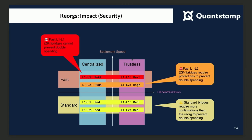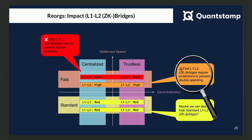The situation gets much more interesting when we look at the security aspect. If you have L1 to L1 bridges and there is a reorg on the source, you can effectively steal the funds, and there is no way to reverse that operation. With fast L1 to L2 bridges, the impact is high, but there may be a way to prevent double spending. For standard bridges, our assessment is that the impact is medium, because as long as you have more confirmations that go beyond the reorg, you should be OK.